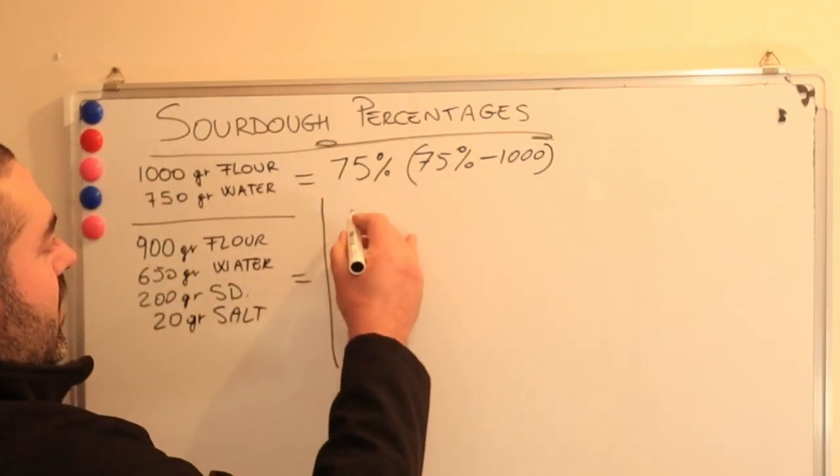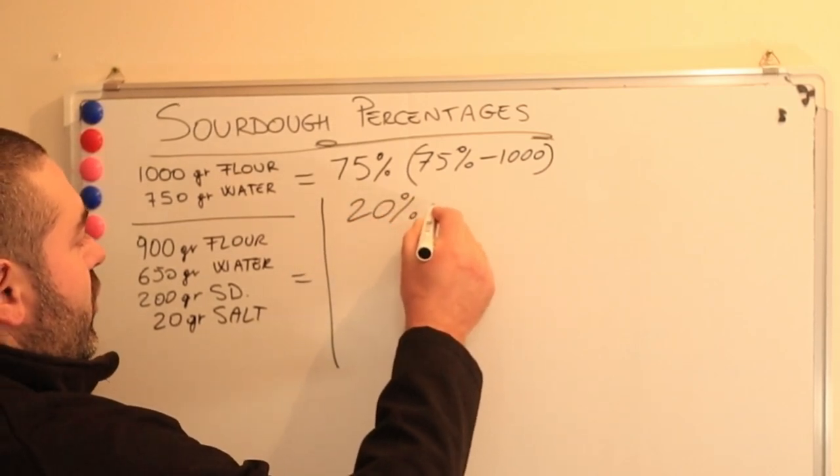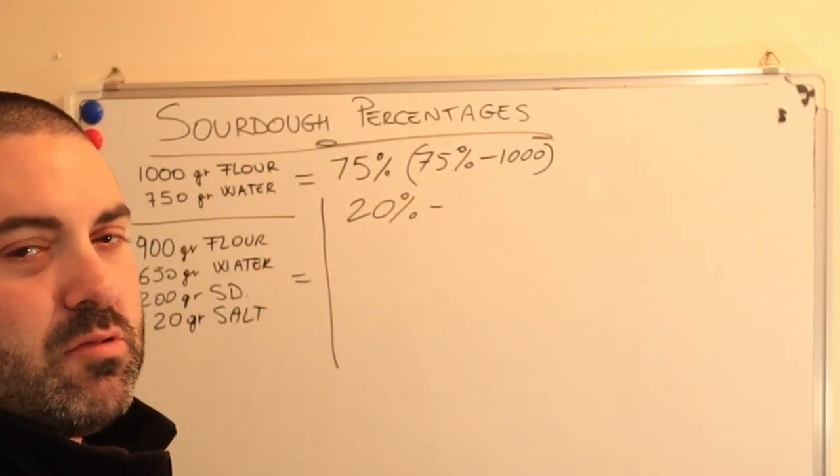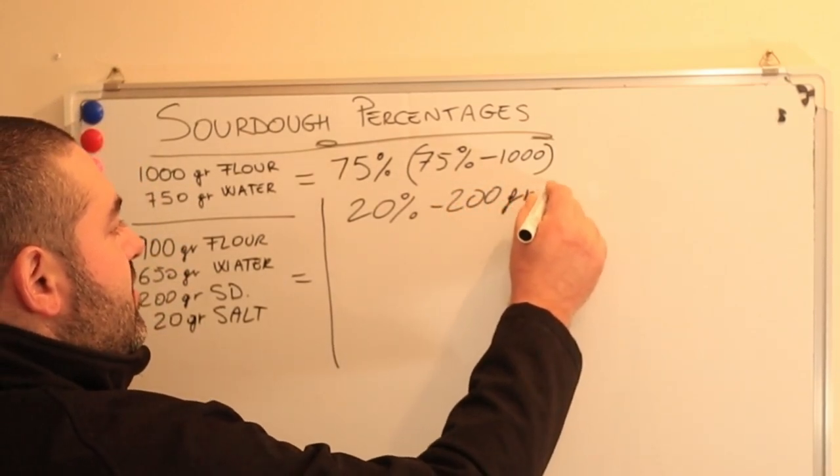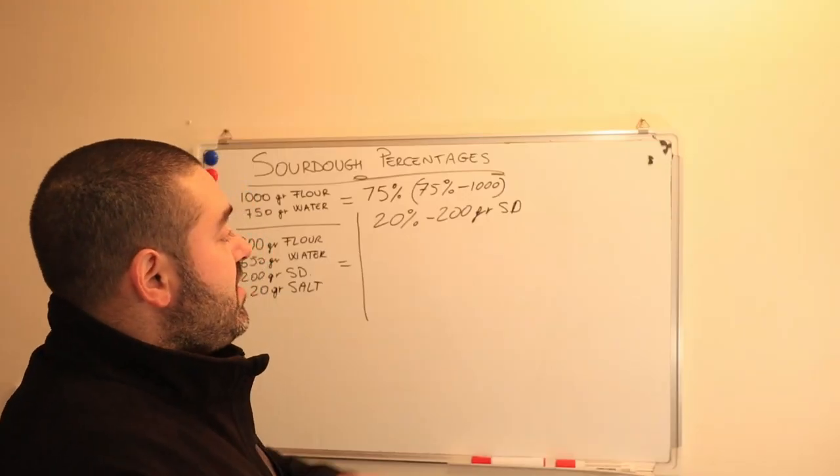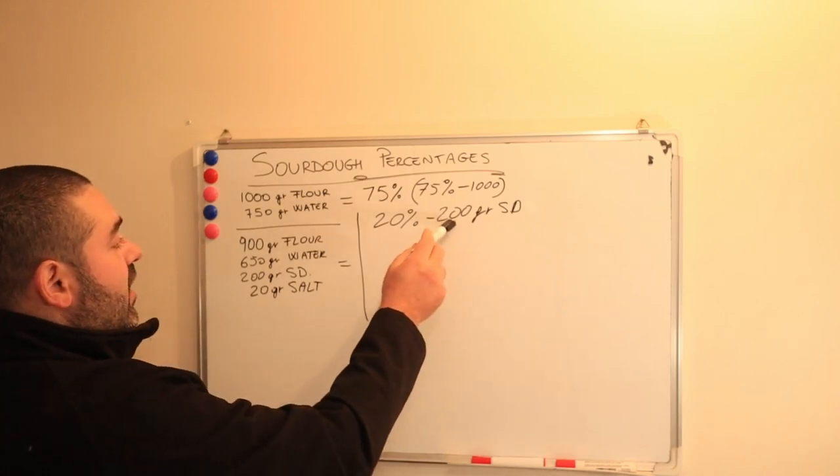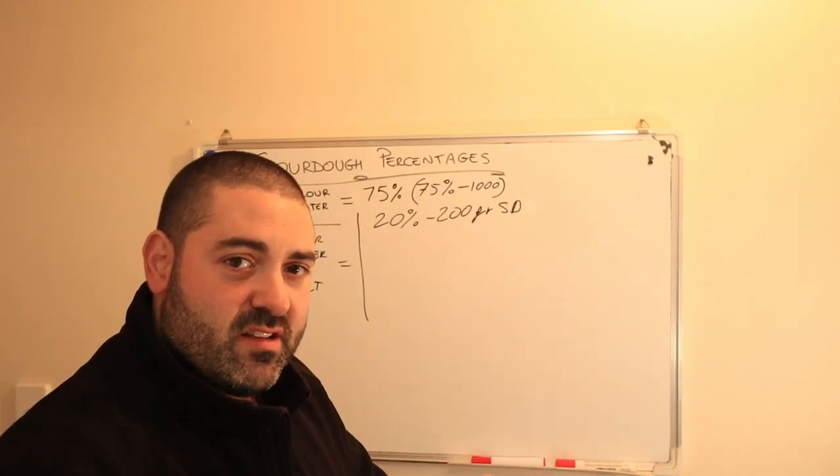For example, let me cross the line here. If you want to use 20% of sourdough culture to the 1000 grams of flour, it will equal to 200 grams of sourdough culture. Okay? We found out this figure now. This figure, if you're using a 100% hydrated sourdough, which means 100 grams of water and 100 grams of flour...